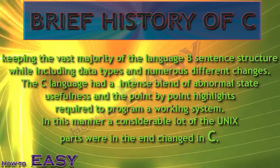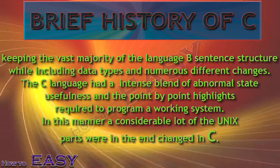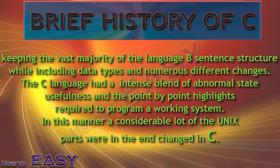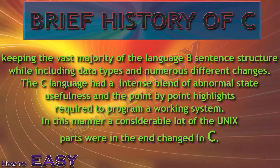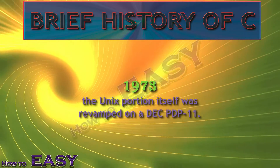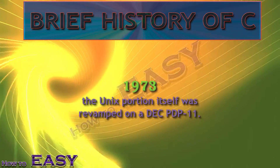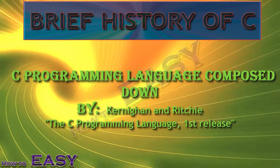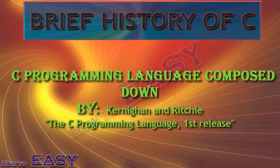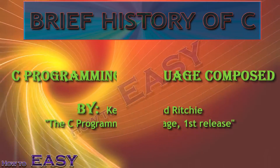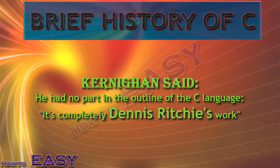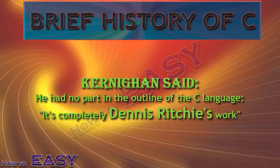The C language had a powerful blend of high-level functionality and the detailed features required to program a working system. In this manner, a considerable lot of the Unix components were eventually rewritten in C. The Unix kernel itself was rewritten in 1973 on a DEC PDP-11. The programming language C was written down by Kernighan and Ritchie in a now classic book called The C Programming Language, first edition. Kernighan has said that he had no part in the design of the C language — it is completely Dennis Ritchie's work.